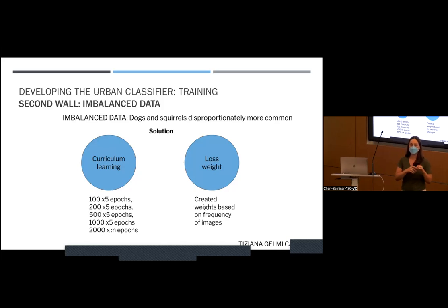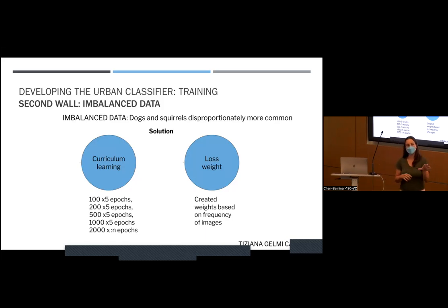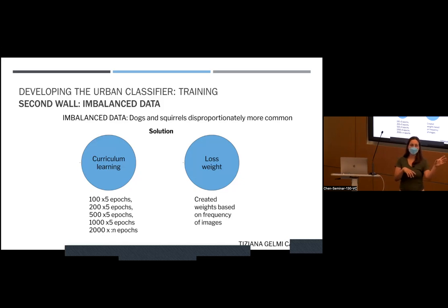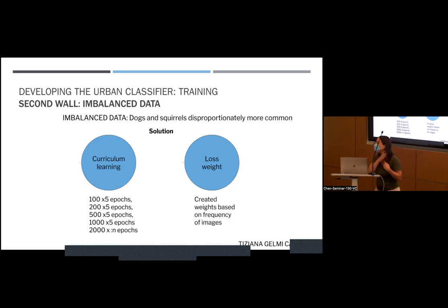The second problem I found was imbalanced data. We had so many squirrels and so many dogs, and that made a big difference — the model accuracy was 99% but it was basically just dogs and squirrels. I applied two things: curriculum learning, where you run 100 pictures for the first epoch, then incrementally more, and we stopped at 2000 images per epoch for the last epochs — so from epoch 20 onward it was 2000 images each time, randomly selected. That really helped a lot.